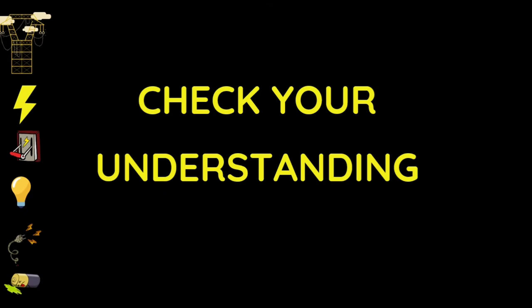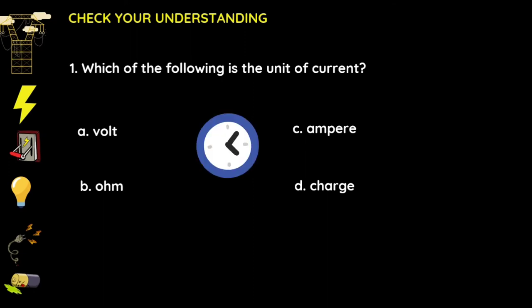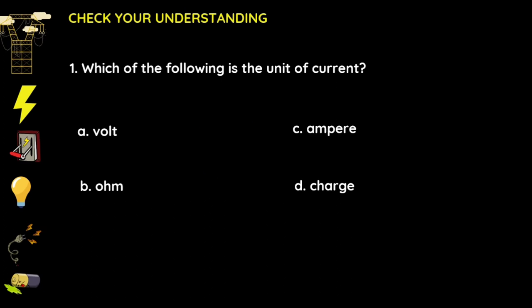Let us check your understanding. Number one: which of the following is the unit of current? A) volt, B) ohm, C) ampere, D) charge. The answer is letter C, ampere.